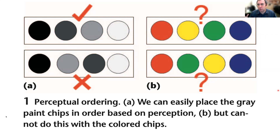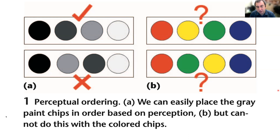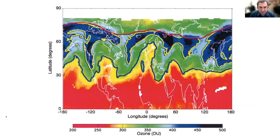But if you look at different shades of gray, you could actually put those in a proper order. So in some sense, even though it's not as colorful, grayscale is actually an advantage over the rainbow map.